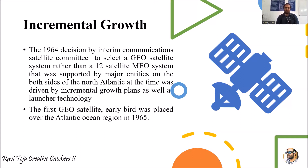The first GEO satellite was called Early Bird. It was placed over the Atlantic Ocean in 1965. This is how they obtained profits — instead of using 12 satellites, they used a single GEO satellite.